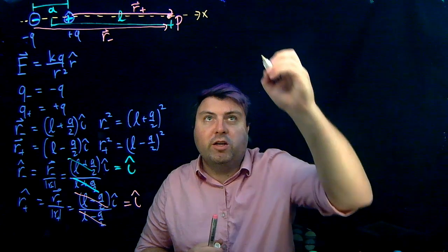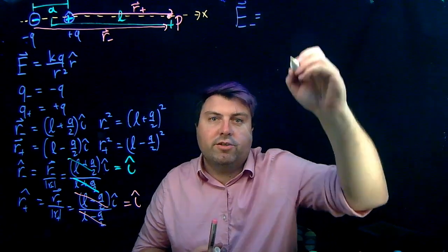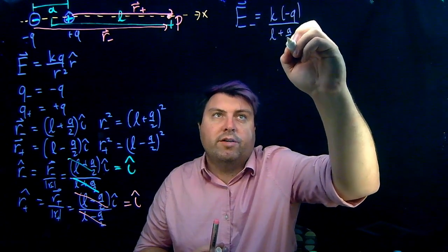So it's very easy for me to write the electric field from the negative charge as K minus Q over L plus A over 2 quantity squared I hat.